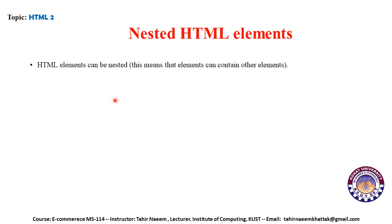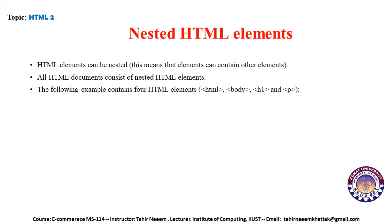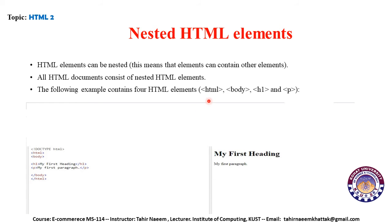Nested HTML elements: HTML elements can be nested, meaning they can contain other elements. All HTML documents consist of nested HTML elements. The following example contains four HTML elements: HTML, body, h1, and p. The h1 and p are nested inside the body, and the body is nested inside the HTML tag.